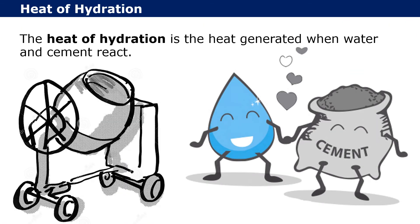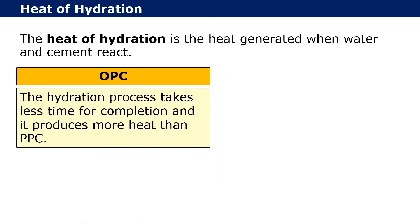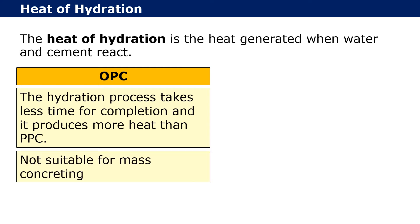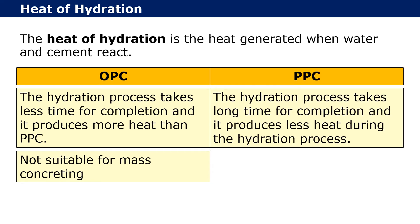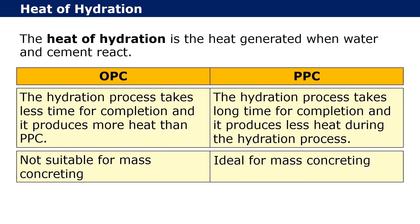Heat of hydration is the heat generated when water and cement react. In the case of OPC, the hydration process takes less time for completion and produces more heat than PPC. If cement produces more heat in less time, it cannot be used for mass concreting as it may generate cracks. In the case of PPC, the hydration process takes longer and produces less heat, hence it is ideal for mass concreting.